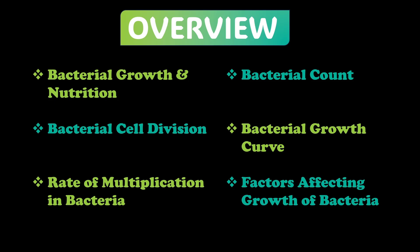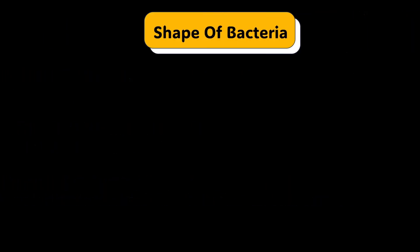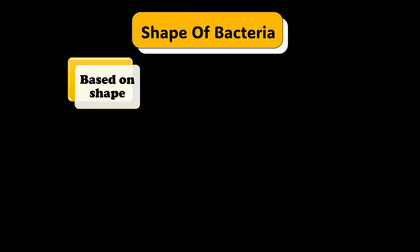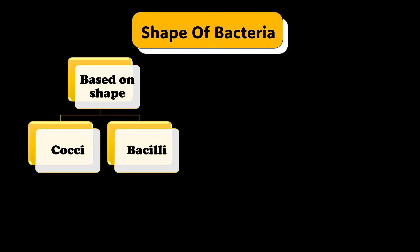We are now going to start with morphology, and the first topic is the shape of the bacteria. Based on shape, there are two types: either it can be a coccus — that is spherical bacteria — or it can be a bacillus, which is a rod-like bacteria, and can sometimes be curved as well.